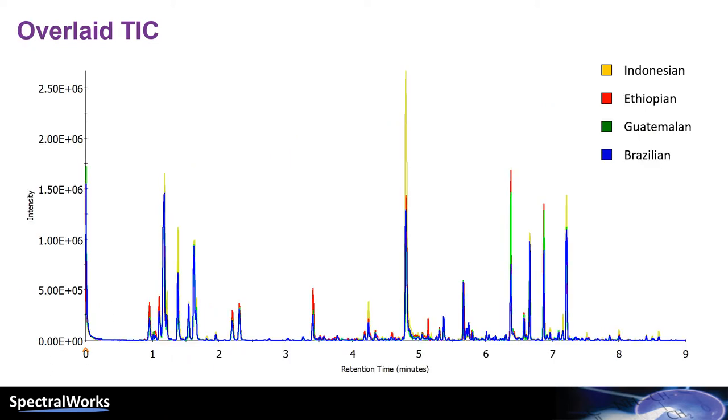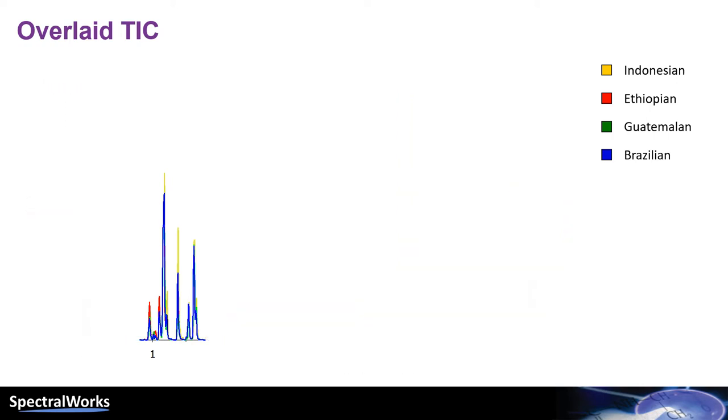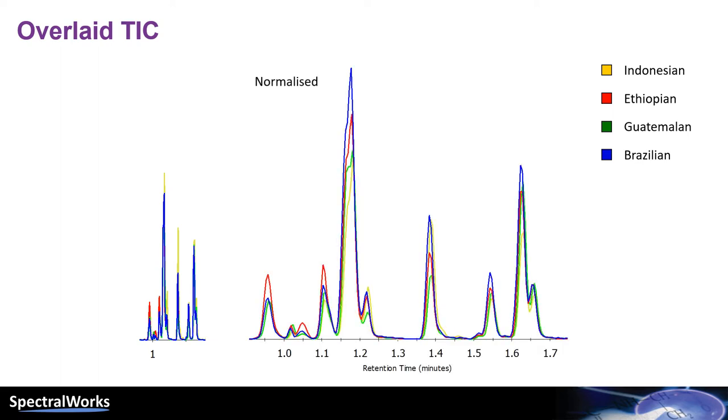When we overlay the absolute TICs, again we can clearly see how similar these files are. On further inspection, if we take the first section of data and zoom in around 50 seconds or so on the normalised traces, we can see we get a better indication on how subtly different these files are.